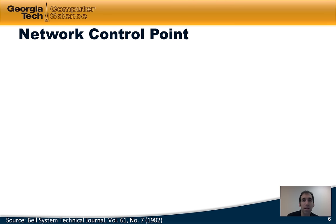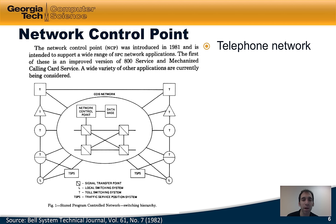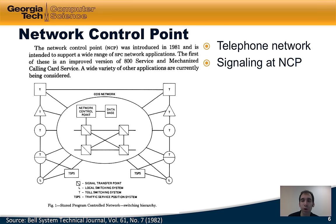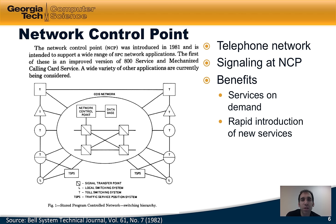In the early 1980s, AT&T took a turn towards separating the data and control planes in something called the Network Control Point. Developed for the telephone network, the idea was that separating signaling from voice and data could enable a number of new services — in particular, the 800 service and several others. All signaling would go to the NCP, which could also talk to a back-end database with additional auxiliary information about customers.